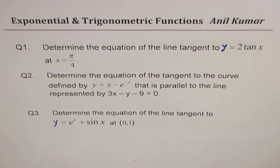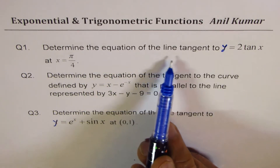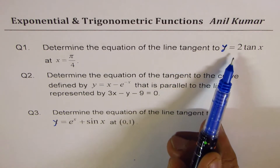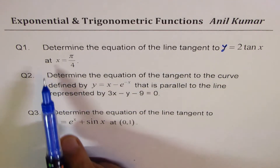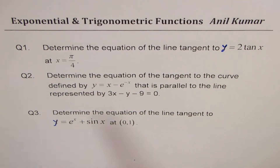Question number one: Determine the equation of the tangent line to y equals 2 tan x at x equals pi by 4.